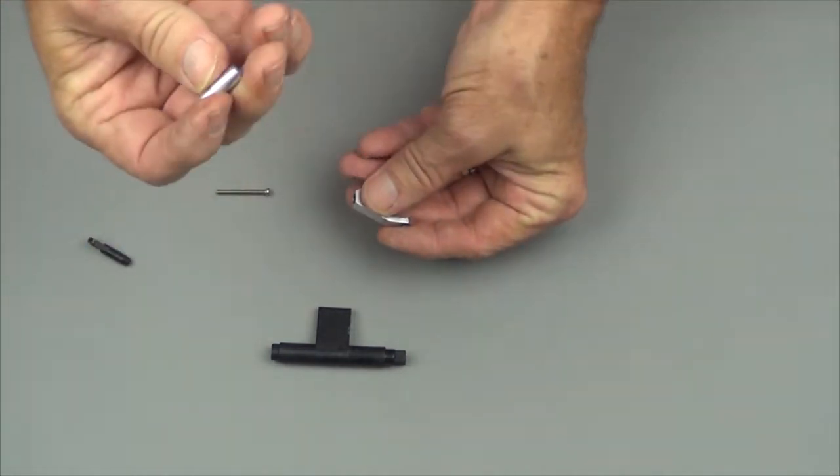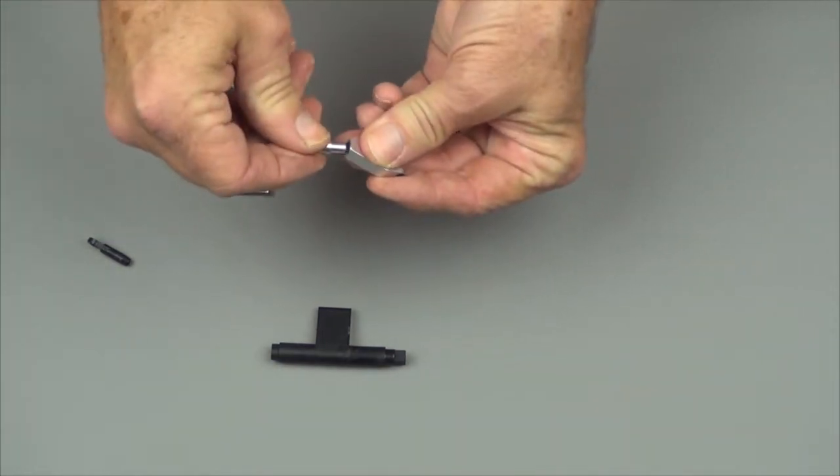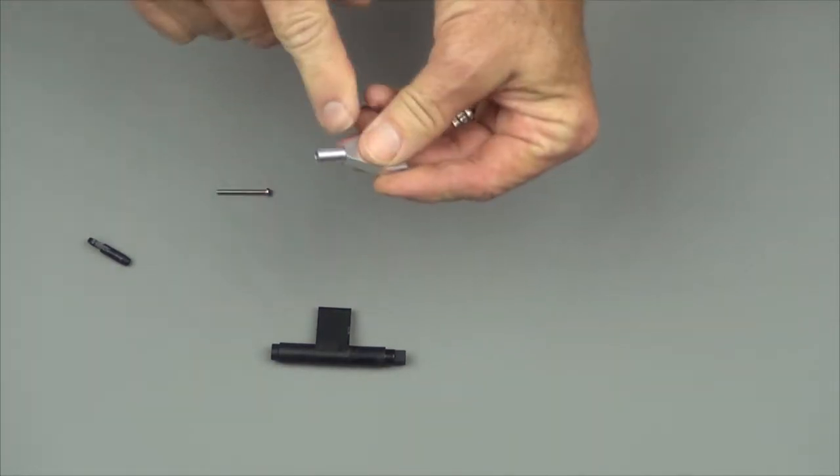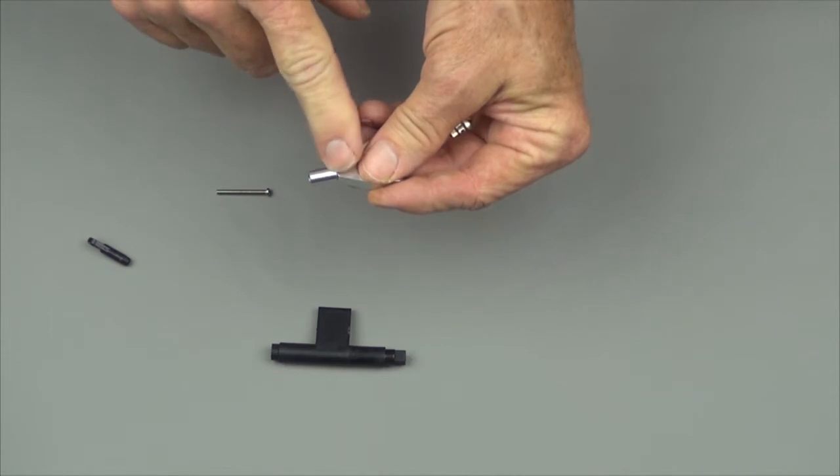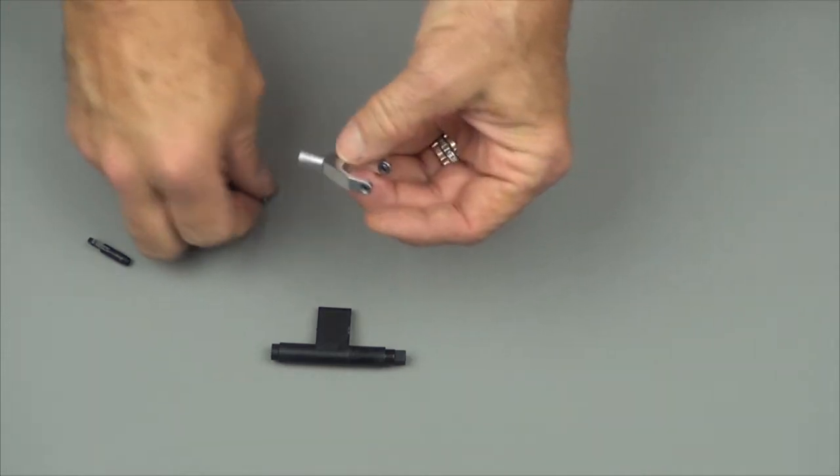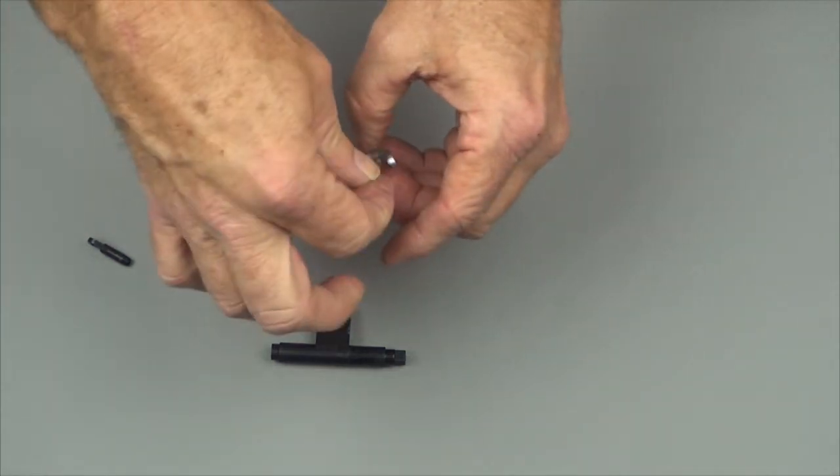Take the stepped aluminum sleeve, push that in. I had to actually sand on that a little bit because it fit really tight with the screw through it.